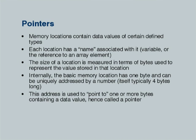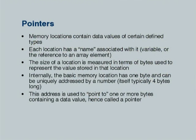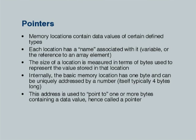This is a recapitulation of something we have been mentioning. First, memory locations contain data values of certain defined types: integer, float, character, short, and so on. Each location has a name associated with it — typically a variable name, or the value would be associated with an array element. Generally these are the only two things which describe data values for us. The size of a location is measured in terms of bytes used to represent the value stored in that location.